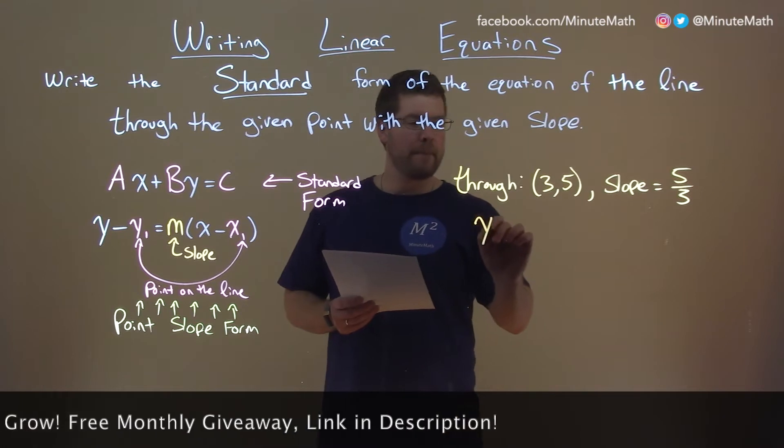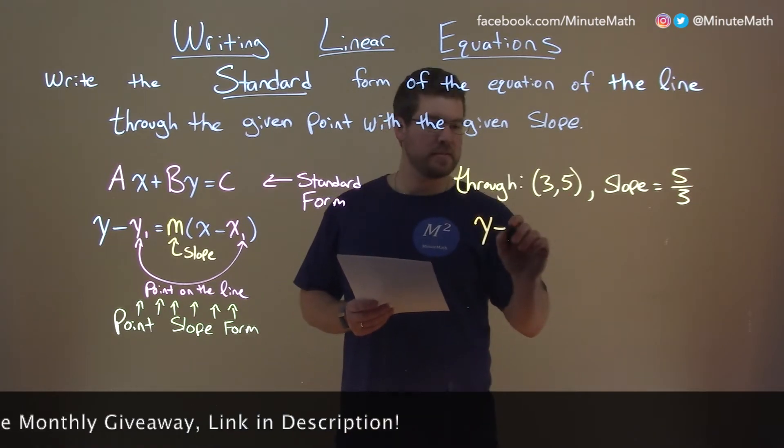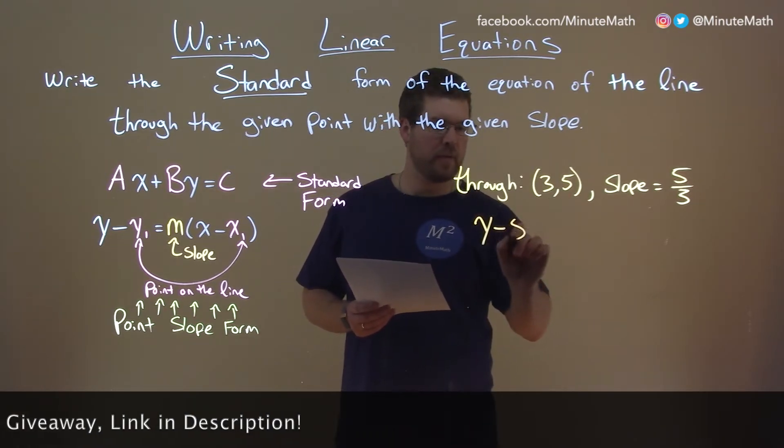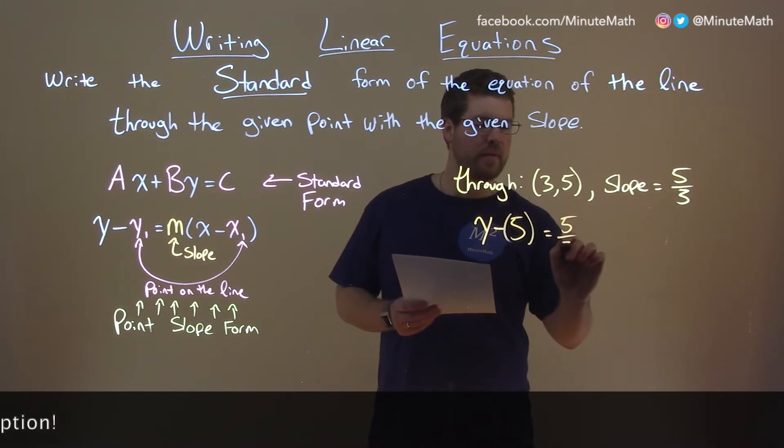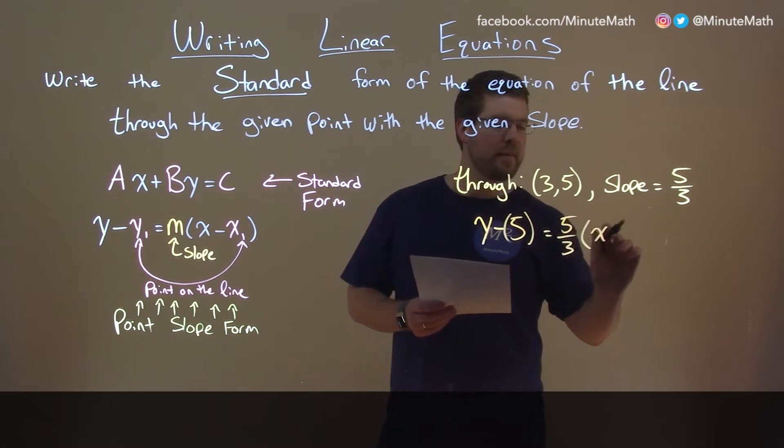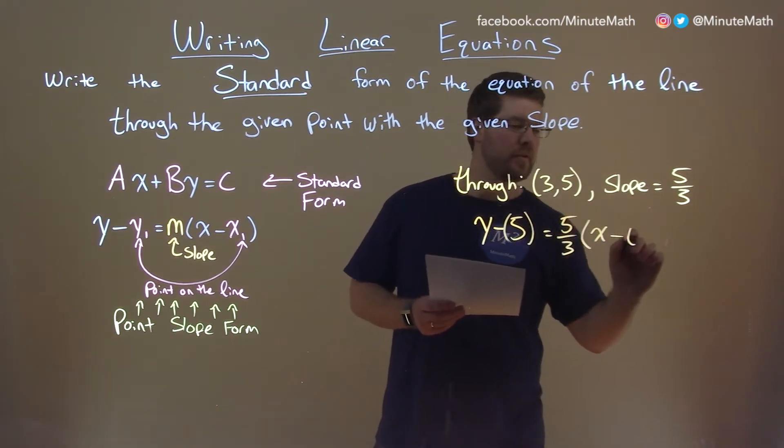So point-slope form, we have y minus our y1, which is our only value here, 5, that we're given, equals our slope, 5 thirds, which is the m value, times x minus x1, which is 3.